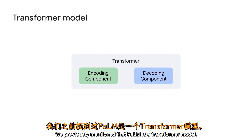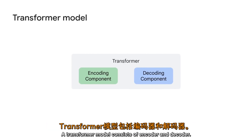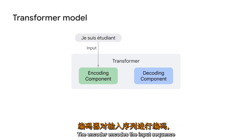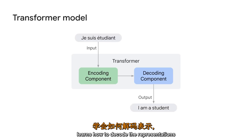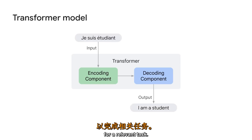We previously mentioned that PaLM is a transformer model. A transformer model consists of an encoder and a decoder. The encoder encodes the input sequence and passes it to the decoder, which learns how to decode the representations for a relevant task.